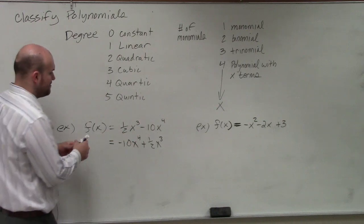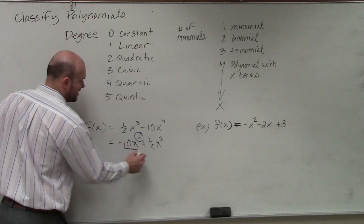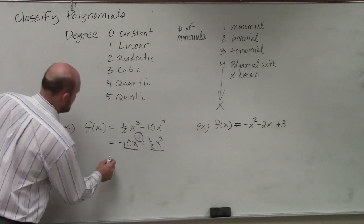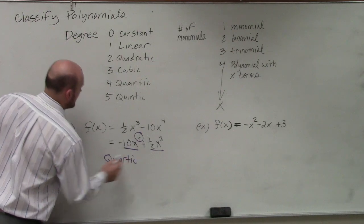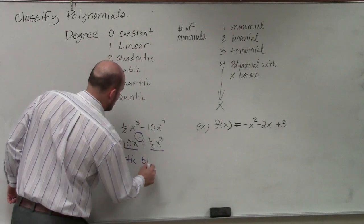You can see that my degree is 4. And how many terms do I have? One, two. So I have a quartic, and there's two terms, which tells me it's a binomial. So it's a quartic binomial.